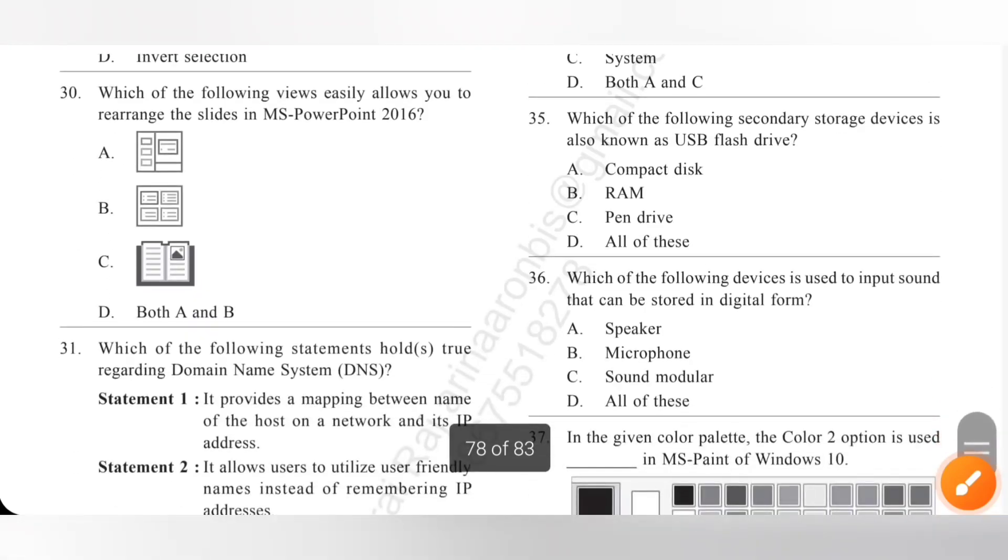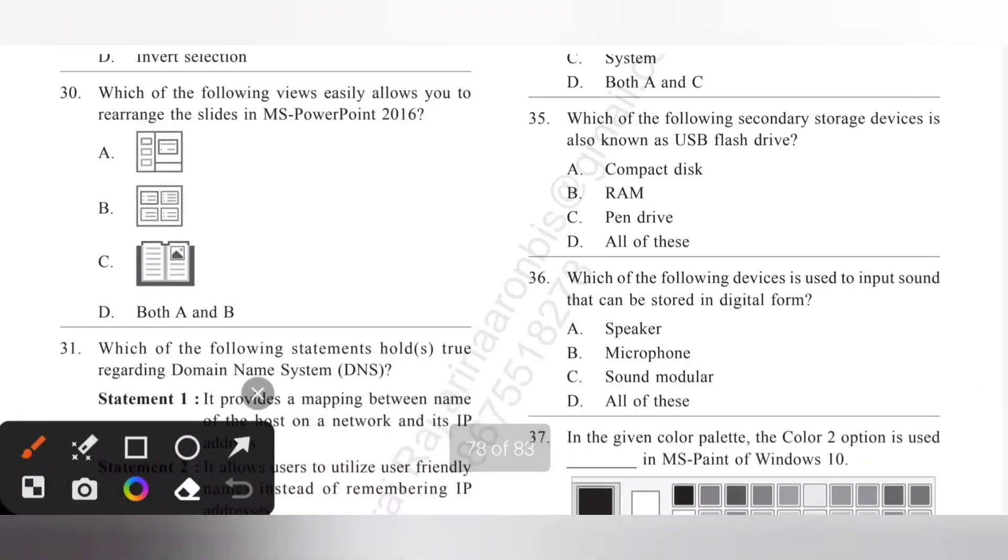Question 35: Which of the following secondary storage device is also known as USB flash drive? So, pen drive is also known as USB flash drive. So, option C is the correct answer.